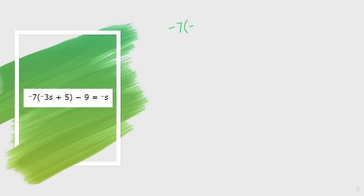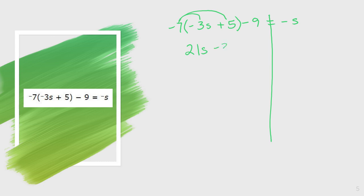Our last example: negative 7 is being multiplied by the quantity negative 3s plus 5, minus 9, and that equals negative s. On this one, I'm going to work as far as I can on my left side. On my right side I just have negative s, so I'm basically going to leave that until the last step. I distribute my negative 7 through. Negative 7 times negative 3s — negative times negative is positive, and 7 times 3 is 21, so I have 21s. Then negative 7 times positive 5 is negative 35. And I bring down my minus 9. That equals negative s.